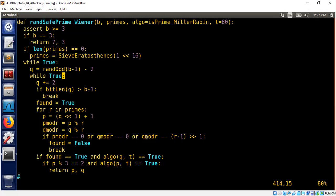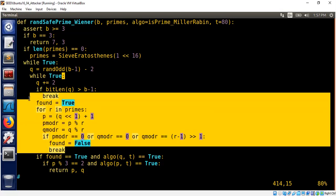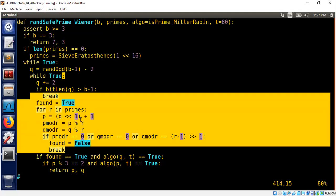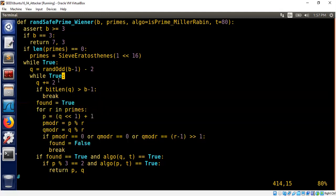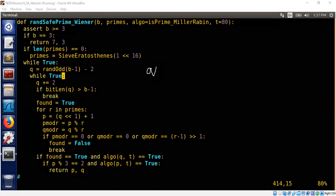If that is equal, if it is equal, that means we have to try something else. So that means it will continue the loop and select another Q, increment the Q by 2. First, it selects a Q, checks whether Q mod R is congruent to R minus 1 by 2 mod R.